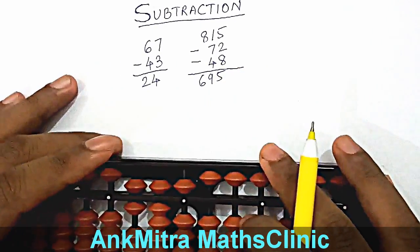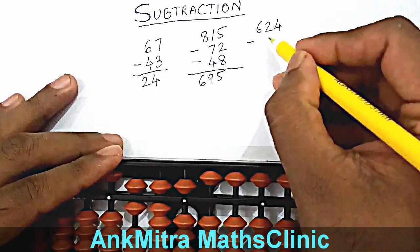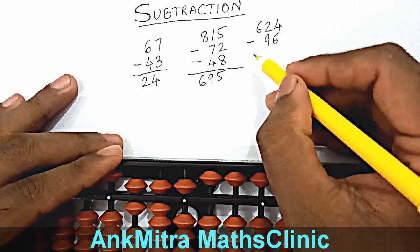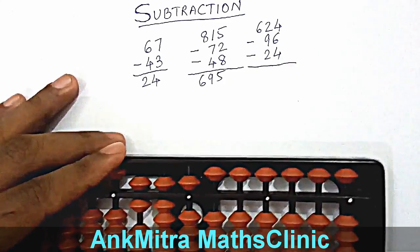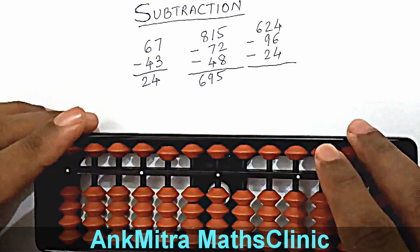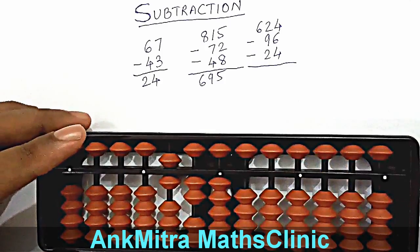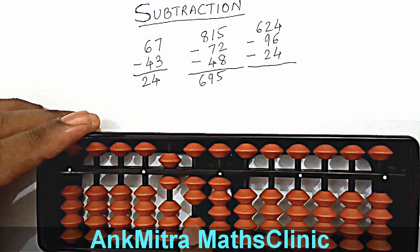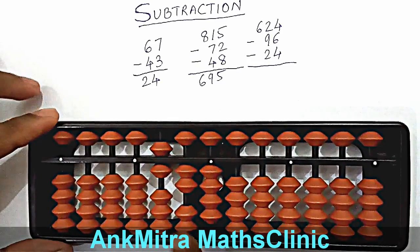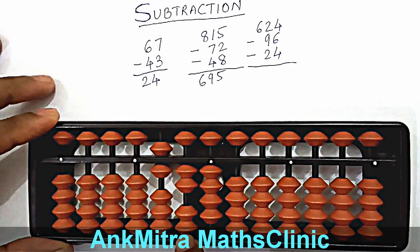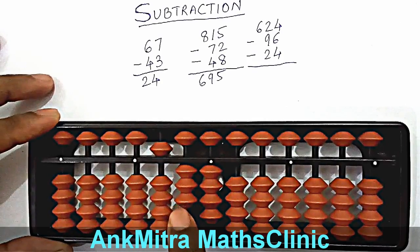Let's take a look at another example. We have 624, and we are supposed to subtract 96 from this, then subtract 24 from that. So first number is 624, which we have taken. For minus 96, we don't have 9 available on the tens place. So for subtracting 9 on this rod, we'll add the big friend of 9. Big friend of 9 is 1. So we'll add 1 and subtract 10 on the next left rod. The 9 part is done on the tens place.